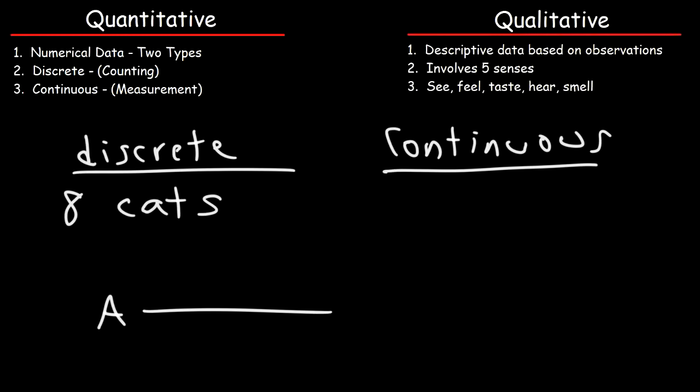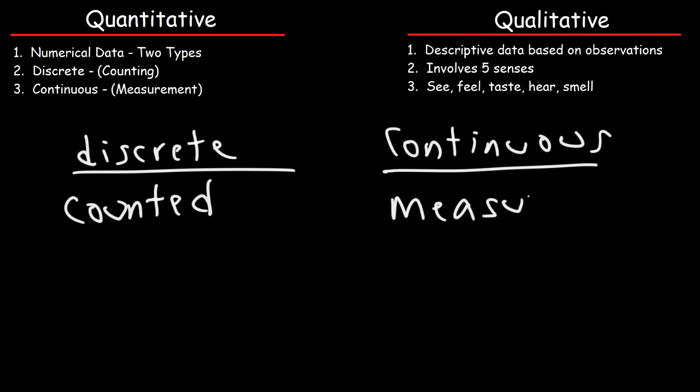So to review, remember this: anything that can be counted would fall in the category of discrete data, which is also quantitative. And anything that can be measured is continuous data, which also falls under the category of quantitative data.